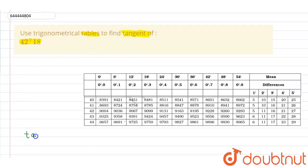So we have tan of 42 degree and 18 minutes. According to this table, this is our degree column and this is our minute row. From here we can find out the degree, which is 42 degree.